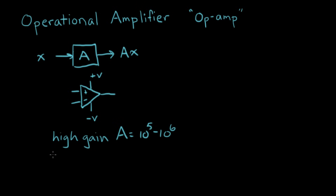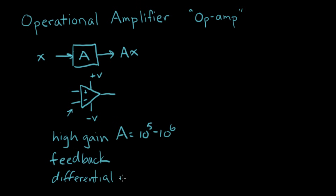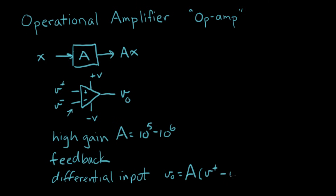Another thing we think about when we talk about op amps is that they're used for feedback circuits. We'll talk about feedback in the next couple of videos and what that means, but that's the application we use op amps for. The third distinctive thing about op amps is that they have a differential input, as opposed to a single-ended input which would be just one wire. We can label the voltages: V out, V plus, and V minus.